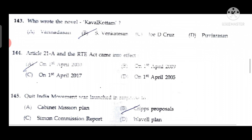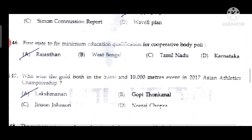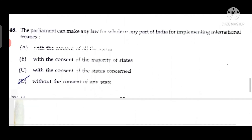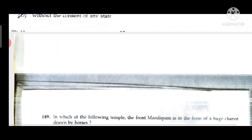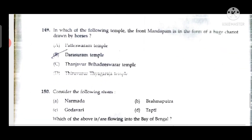Question 145: The Quit India Movement was launched in response to the Cripps Proposal. Question 146: The first state to fix minimum education qualification for cooperative body polls is Rajasthan. Question 147: Laxmanan won gold in both the 5,000 and 10,000 meter events in the 2017 Asian Athletics Championship. Question 148: Parliament can make any law for the whole or part of India for implementing international treaties without the consent of any state.